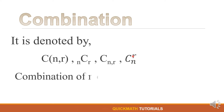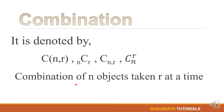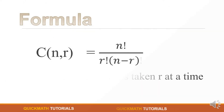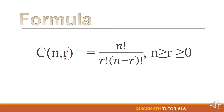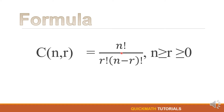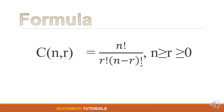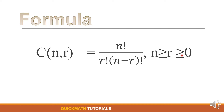This can be read as the combination of n objects taken r at a time. The formula for the combination of n objects taken r at a time is equal to n factorial over r factorial times (n minus r) factorial, where n is greater than or equal to r and r is greater than or equal to 0.